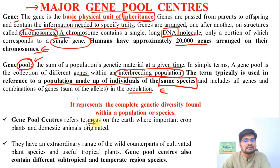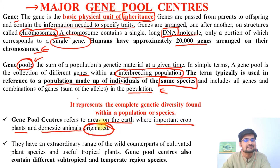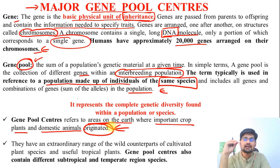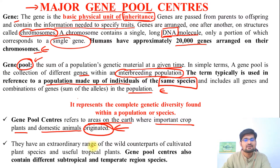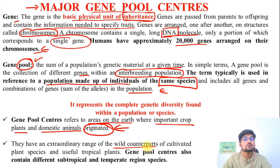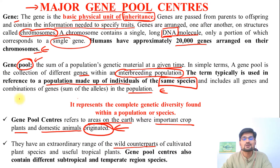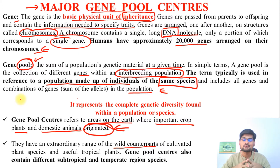Gene pool centers refer to areas on earth where important crop plants and domestic animals originated. Genetically, we look at where particular species originated. These centers have an extraordinary range of wild counterparts of cultivated plant species — many species useful to people today came from other places. Gene pool centers also contain subtropical, temperate region species, tropical plants — all these are part of major gene pools.